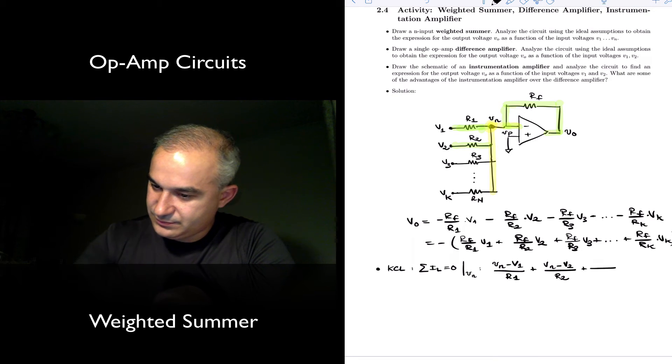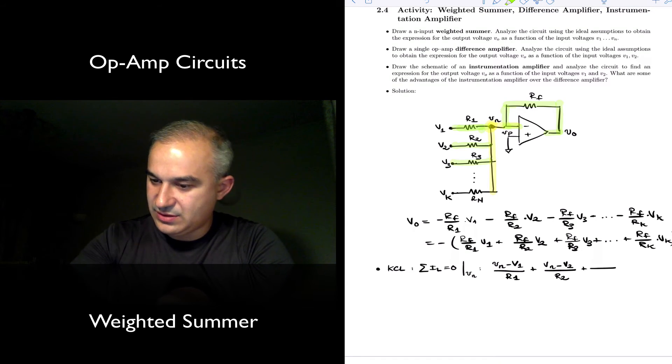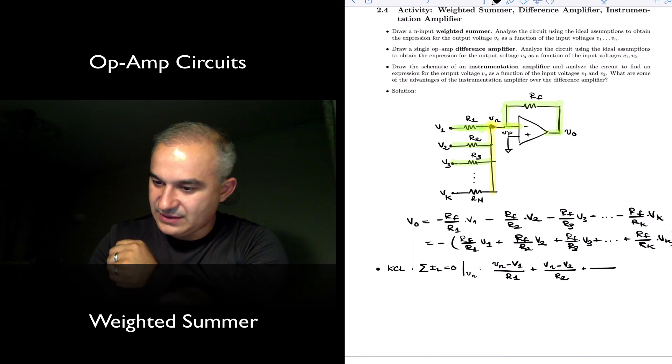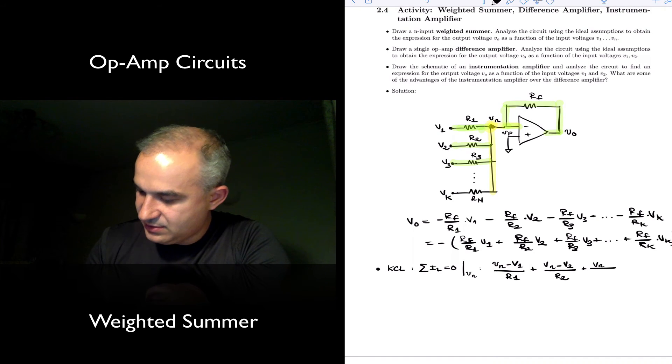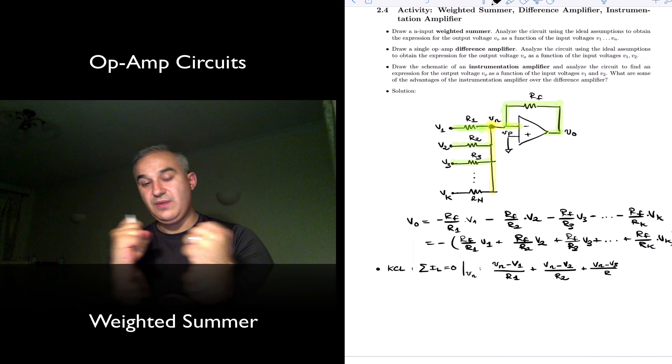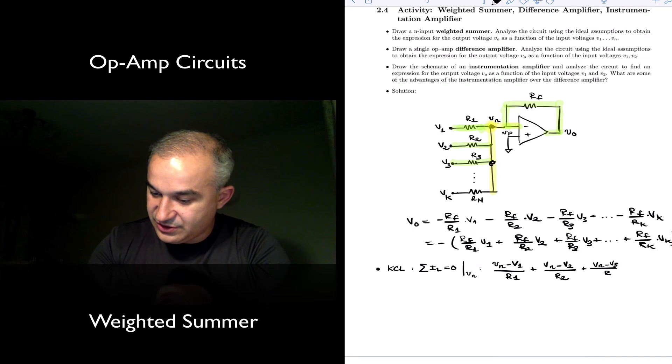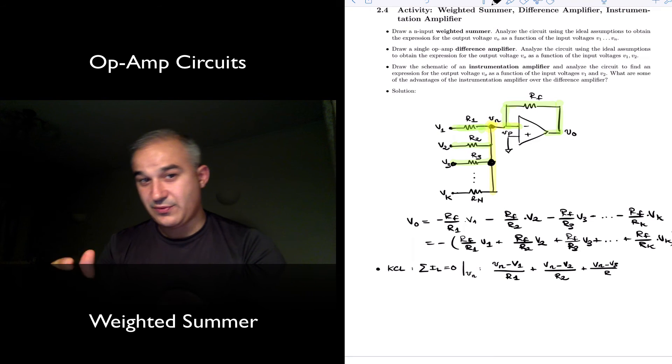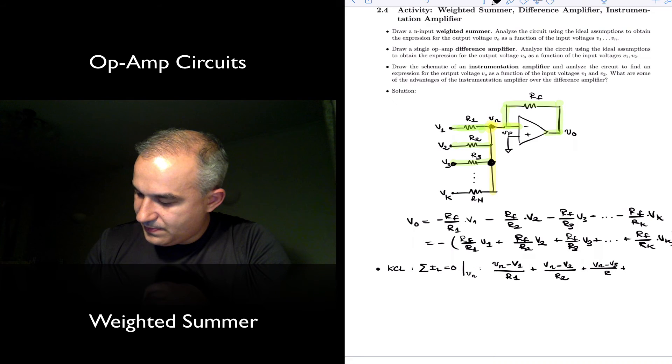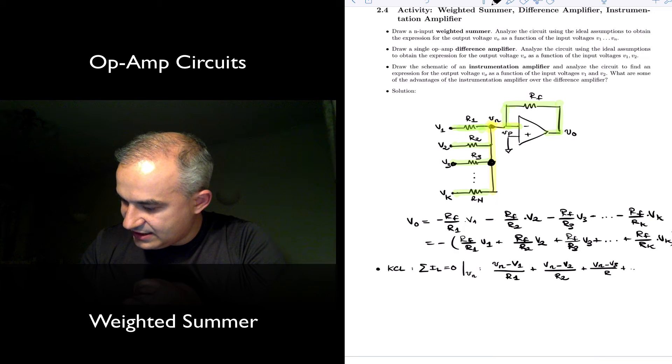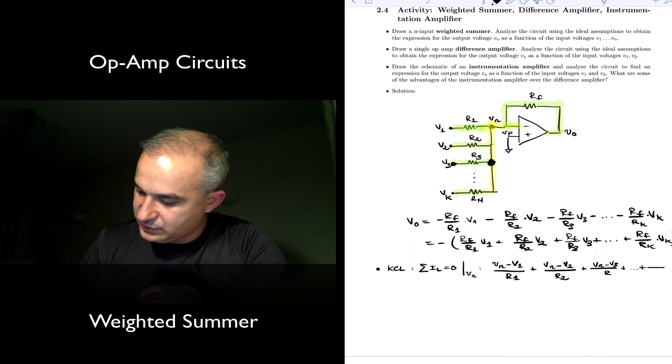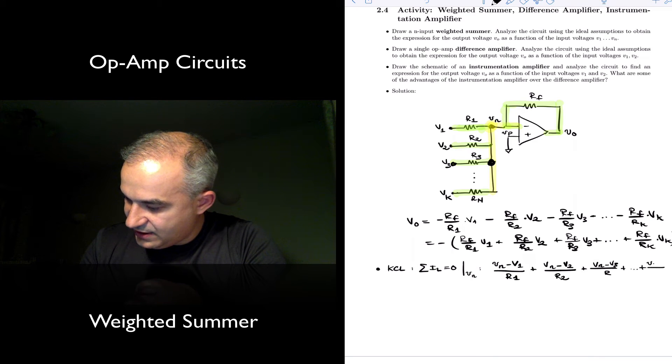The current leaving this node, Vn minus V3 over R3. Remember current is difference in potential voltages, so you have a voltage here you have a voltage here, difference in potential divided by resistance. Plus the current through this branch here, dot dot dot plus that is equal to Vn minus Vk divided by Rn.